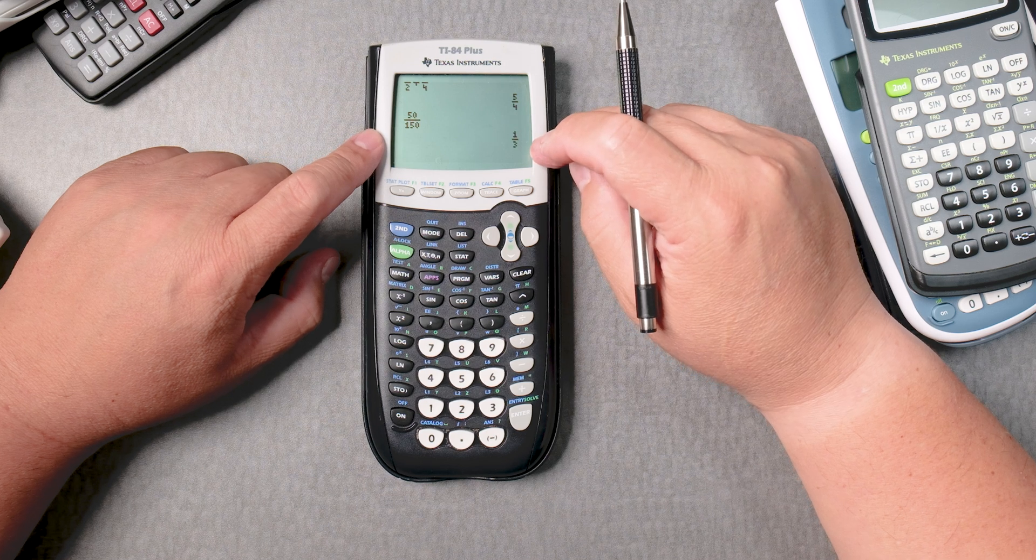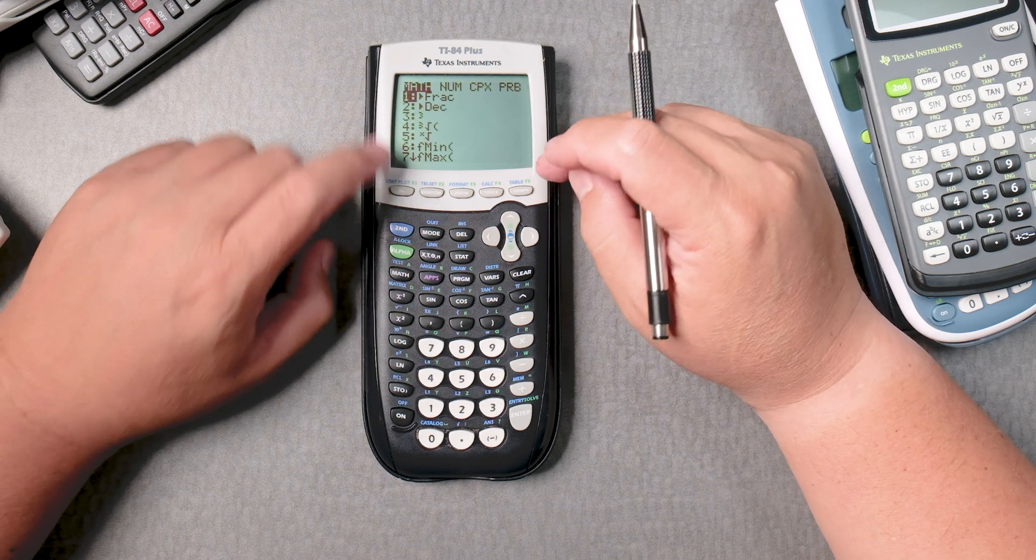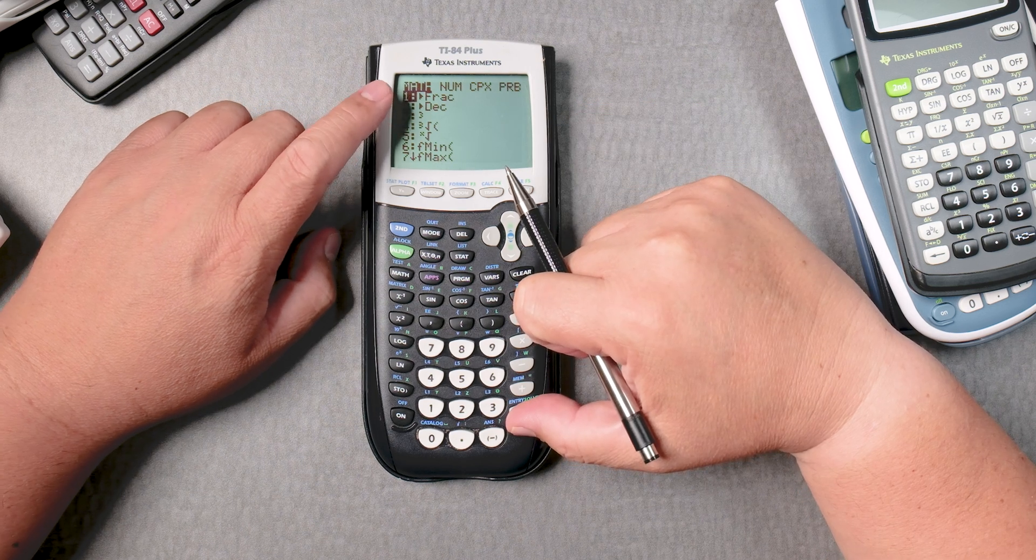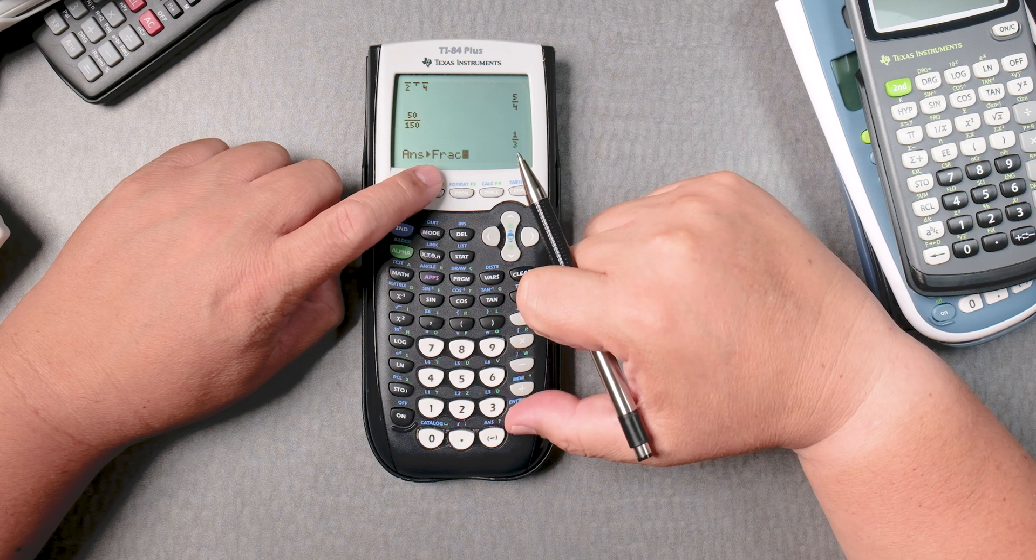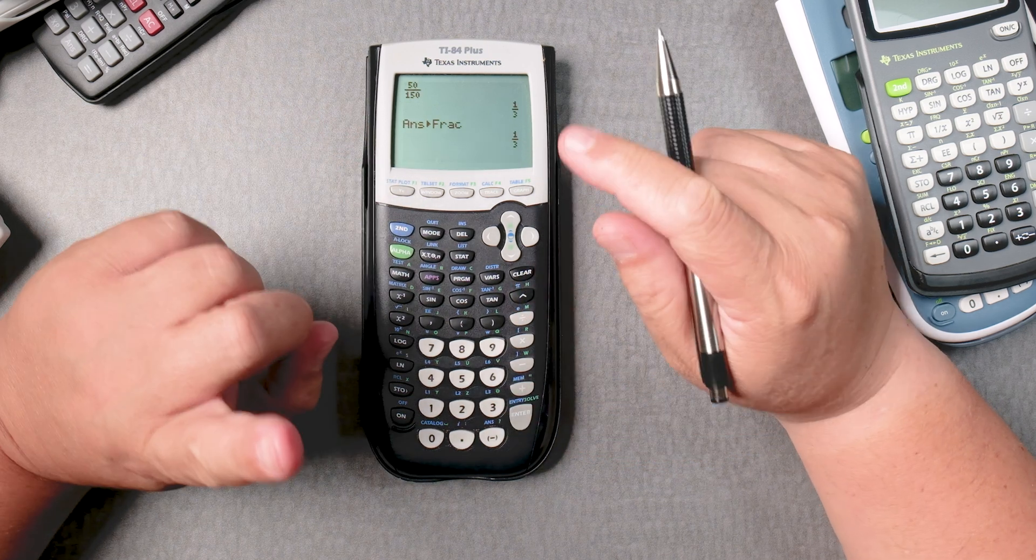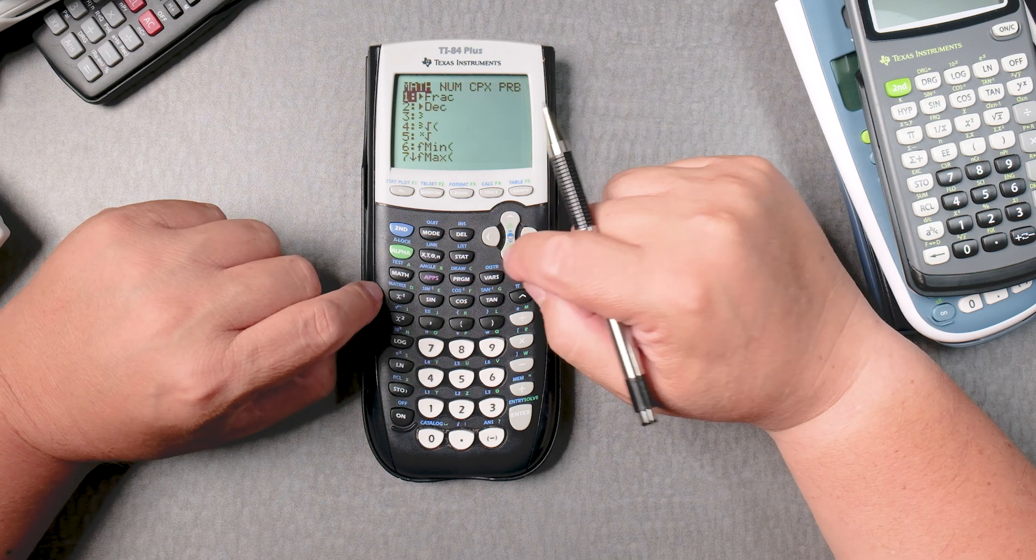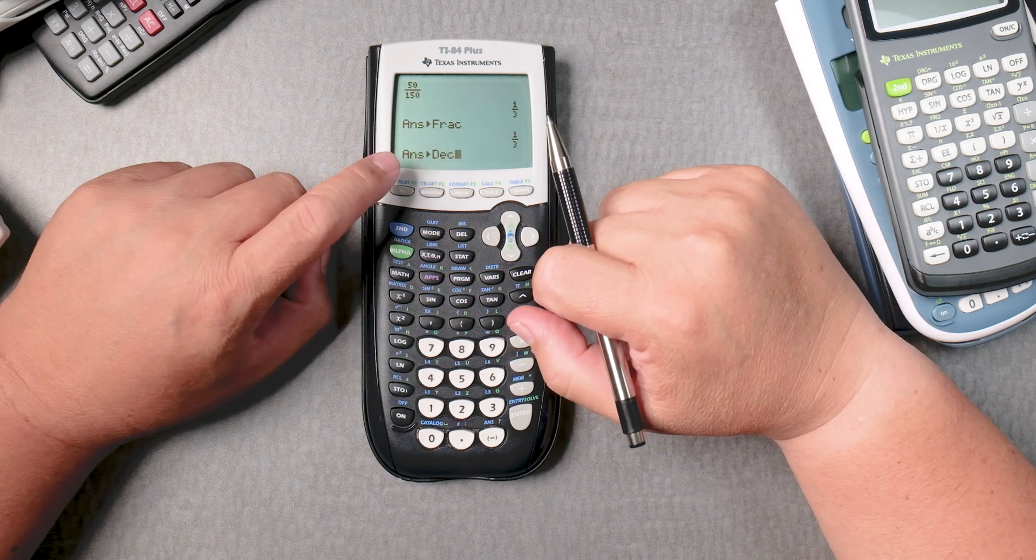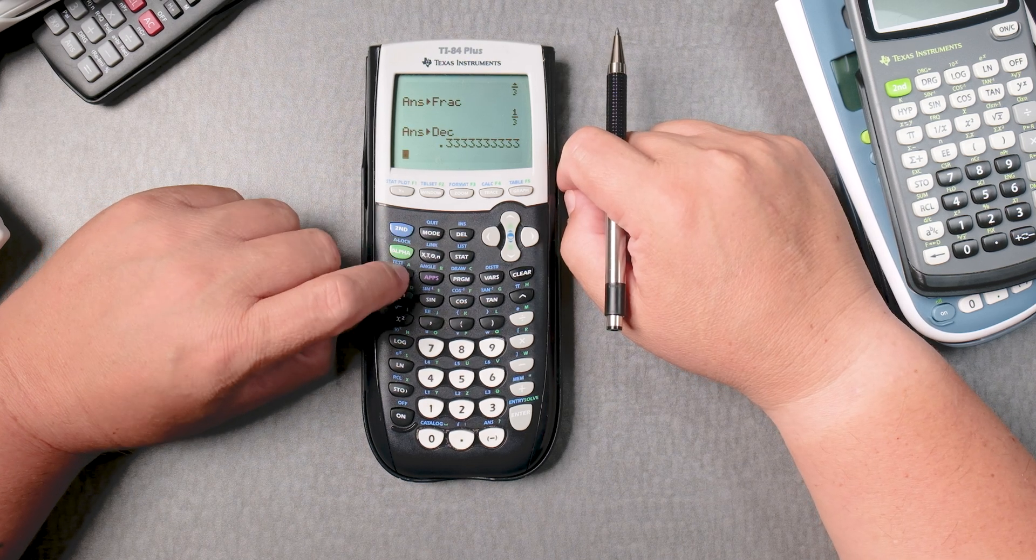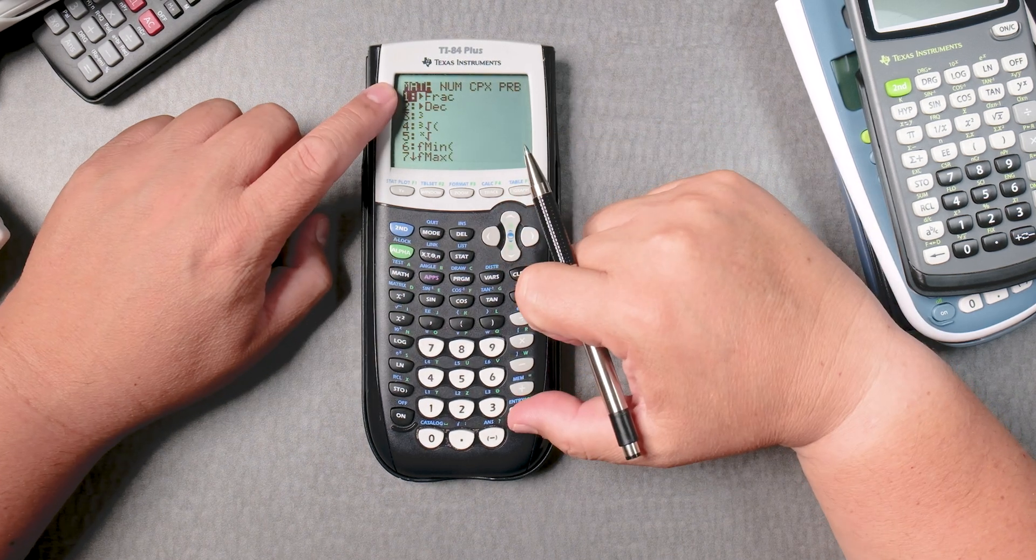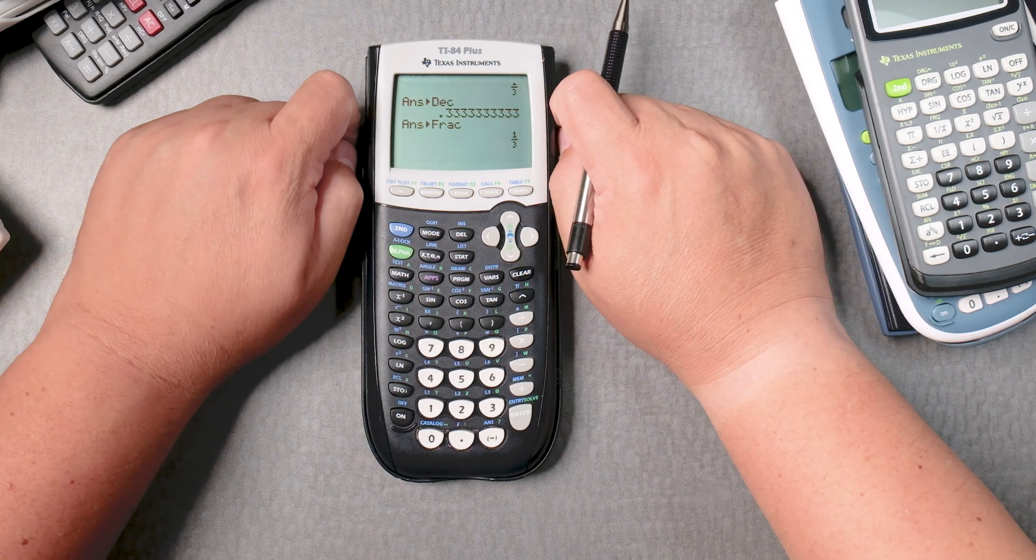Let's say I want this fraction to be a decimal. So you go to MATH and it says fraction. Take the answer and make it a fraction. Wait, wrong one. Decimal. There we go. Answer to decimal. There it is. And then you can go back, take the decimal and convert it to a fraction.